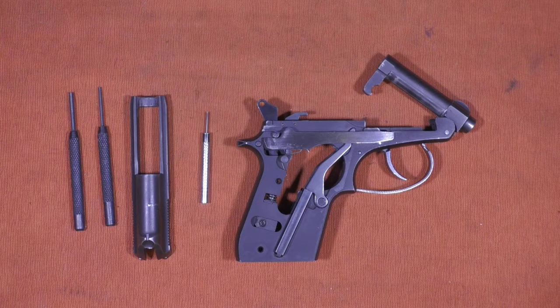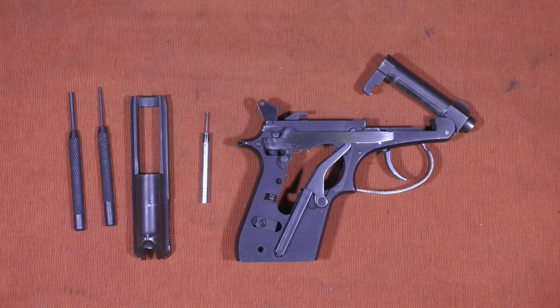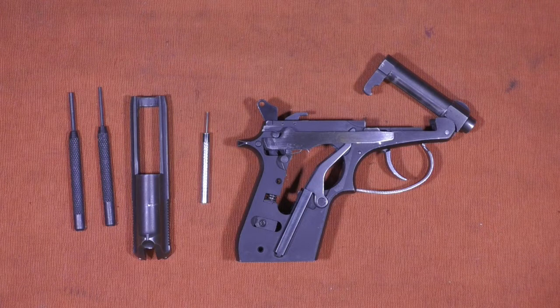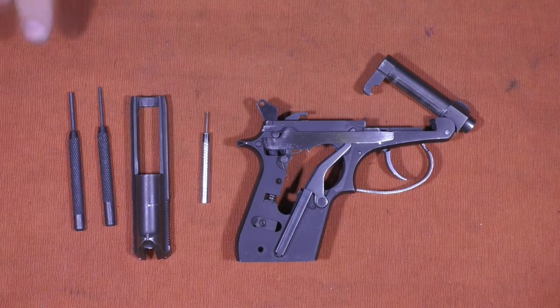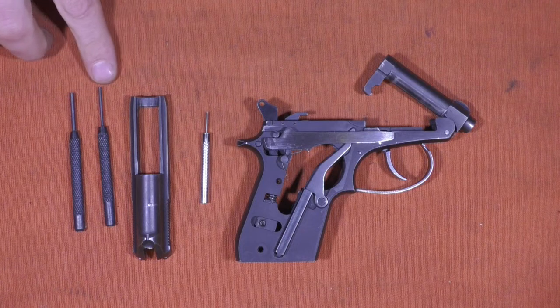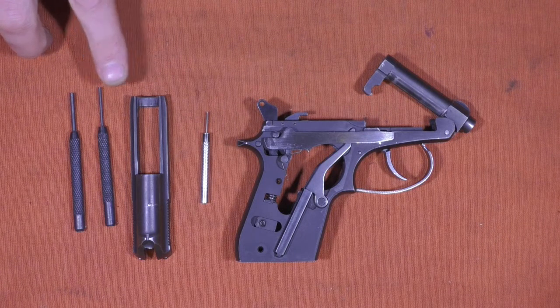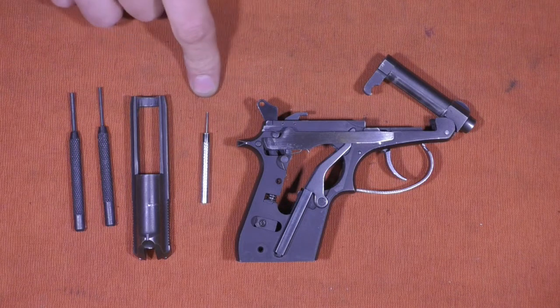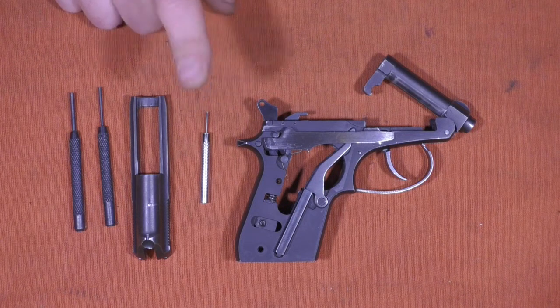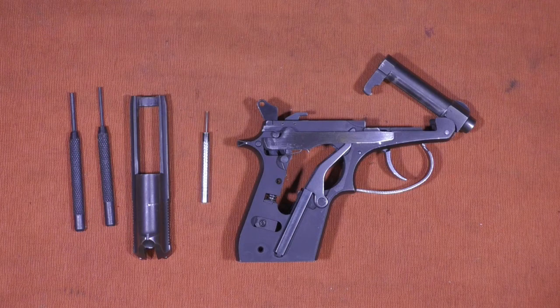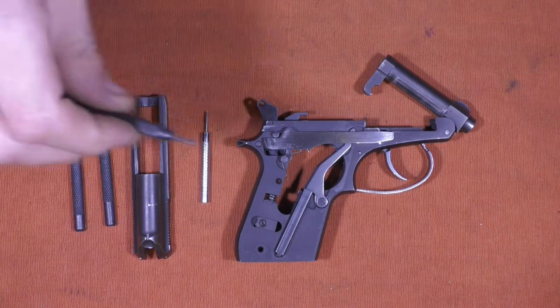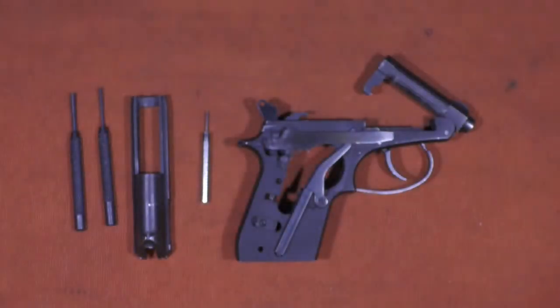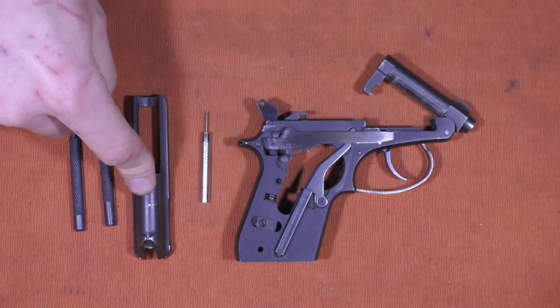Before we get started, let's go over the tools that you will need for this, and I don't normally do this, but this is an important one because you may not have one of the tools that you need. You will need a 3/32nds punch, a 1/16th inch punch, which if you have a gunsmith punch set you will have, but what you probably won't have that you need is a one millimeter punch, and that's part of why it took me a little while to get this done because I broke off my other 1/16th millimeter punch trying to remove the firing pin roll pin.